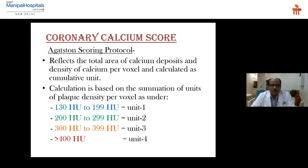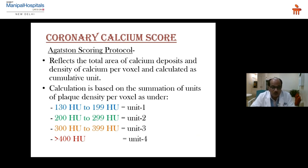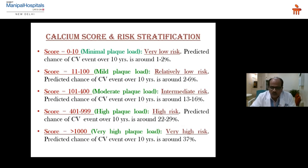How is calcium score calculated? It reflects the total area of calcium deposits and density of calcium per voxel, calculated as a cumulative unit. Calculation is based on summation of units of plaque density per voxel: 130–198 Hounsfield units = 1, 200–299 = 2, 300–399 = 3, and above 400 Hounsfield units = 4. The summation across the entire coronary tree gives the total calcium score.